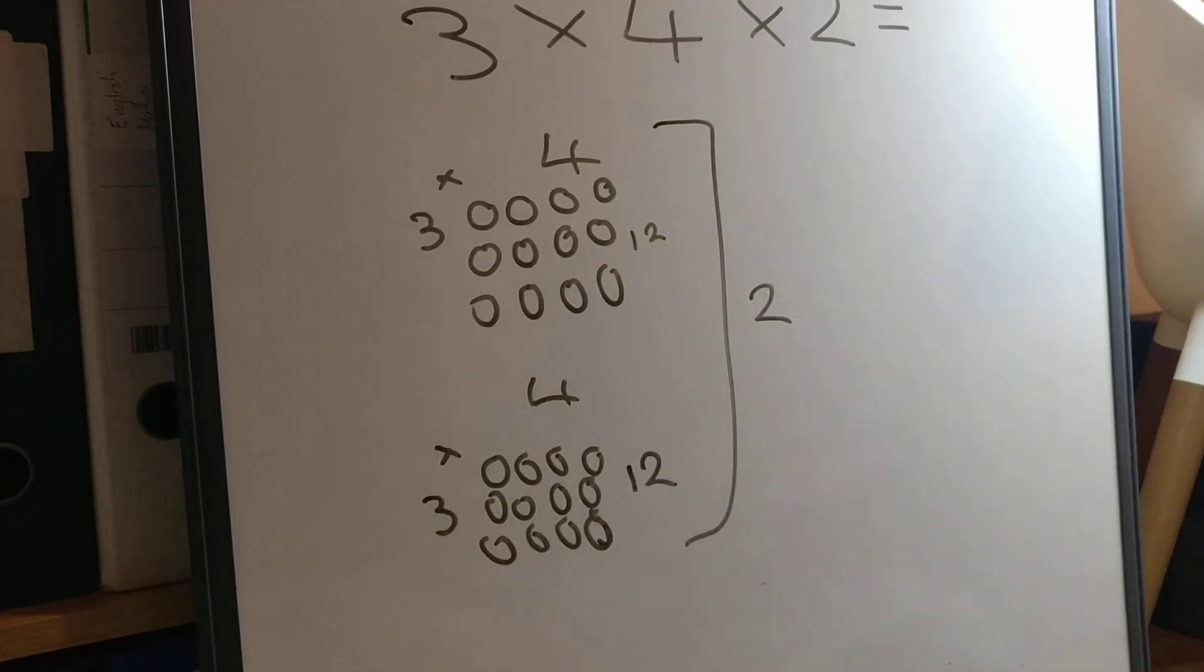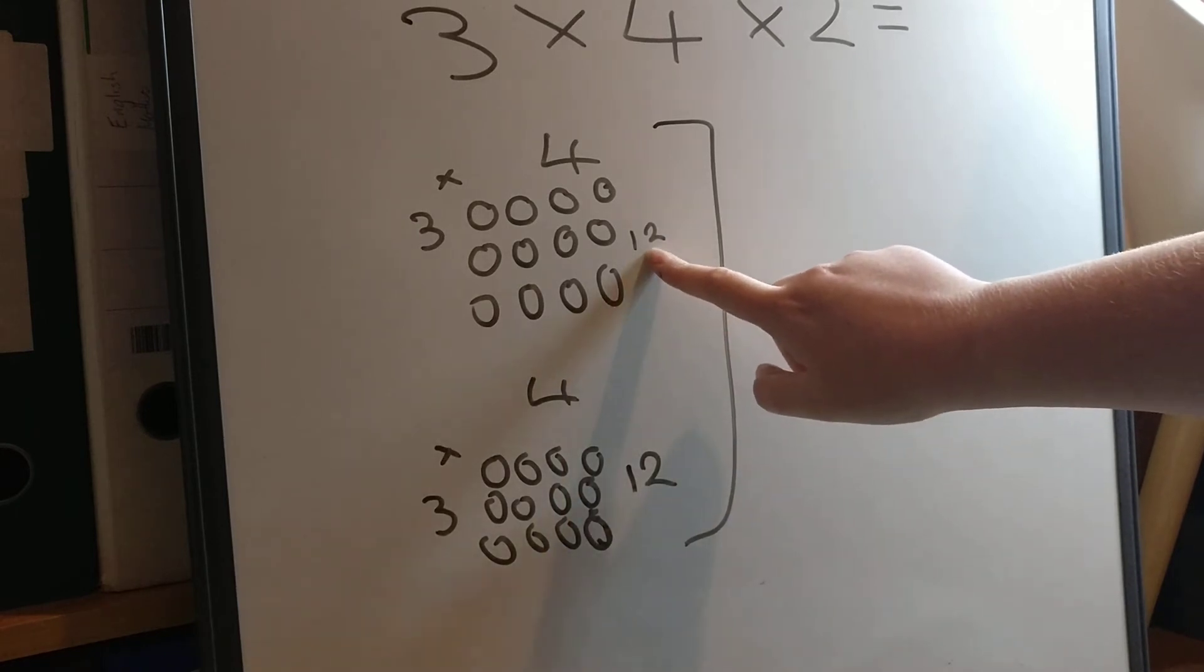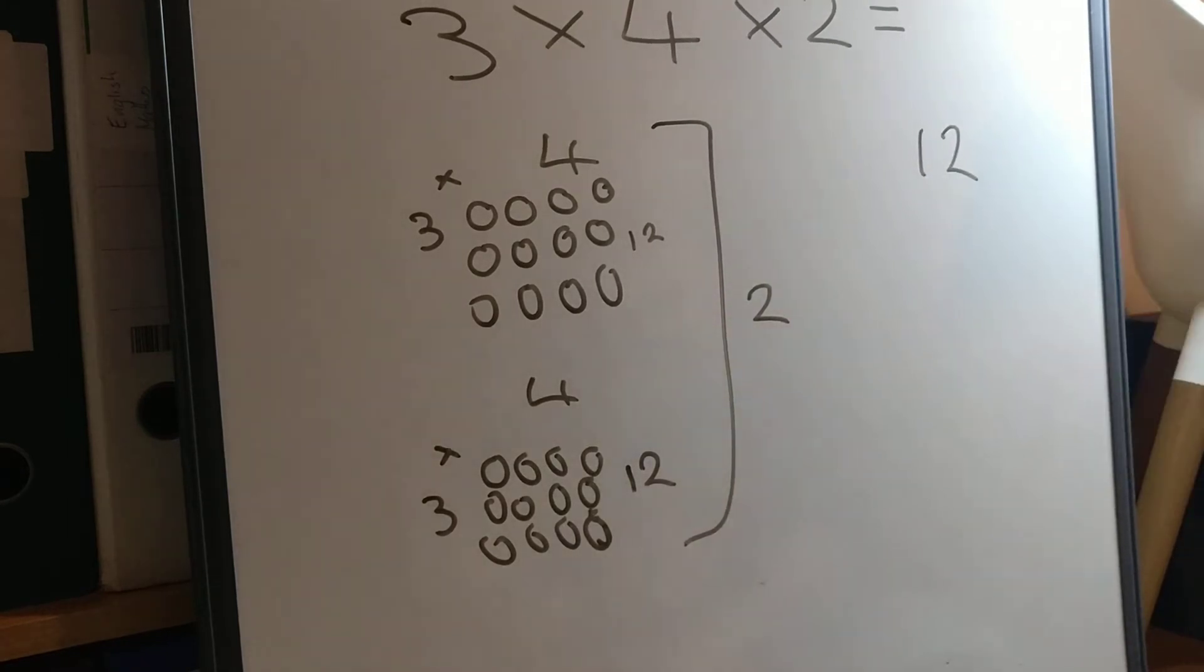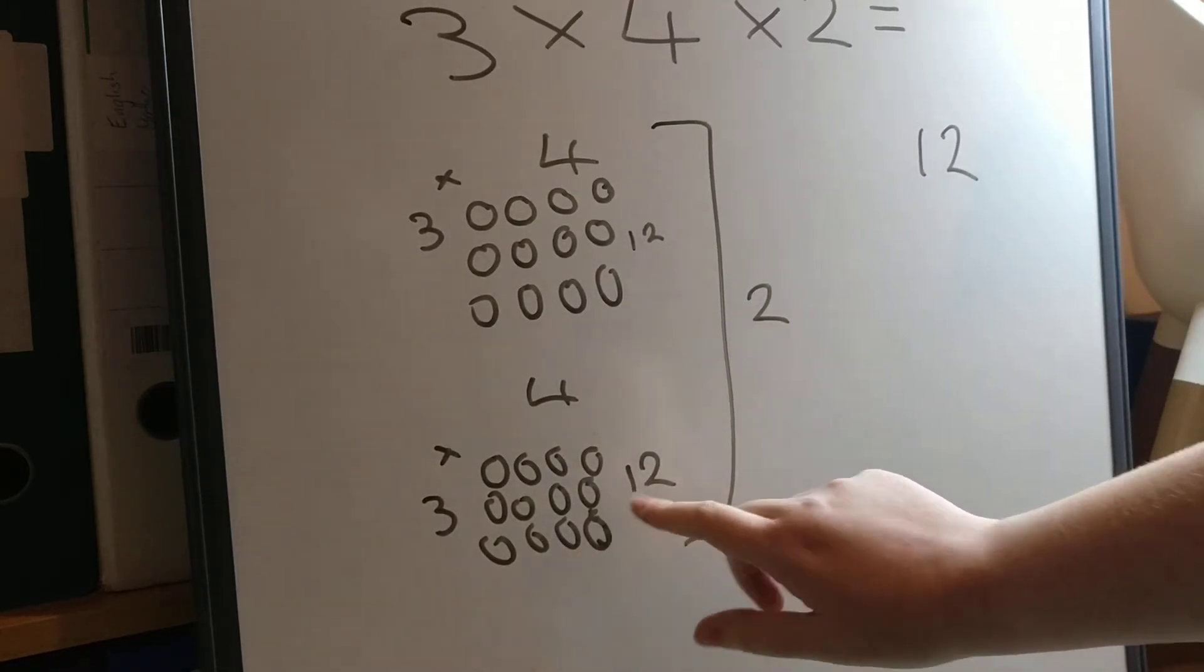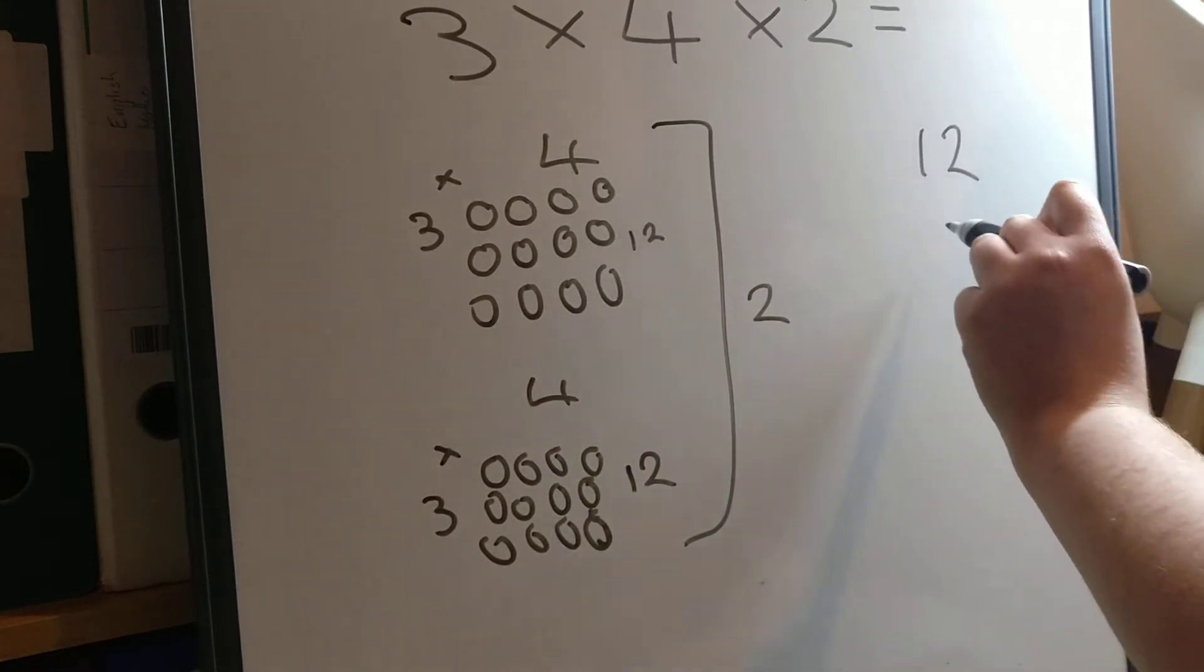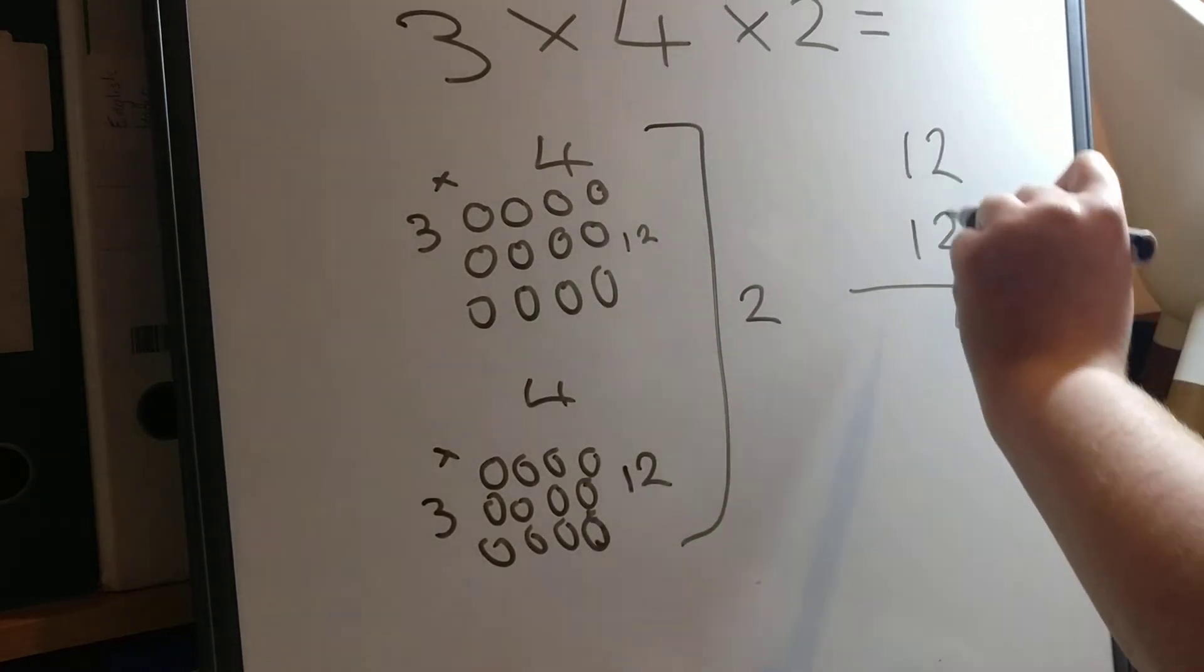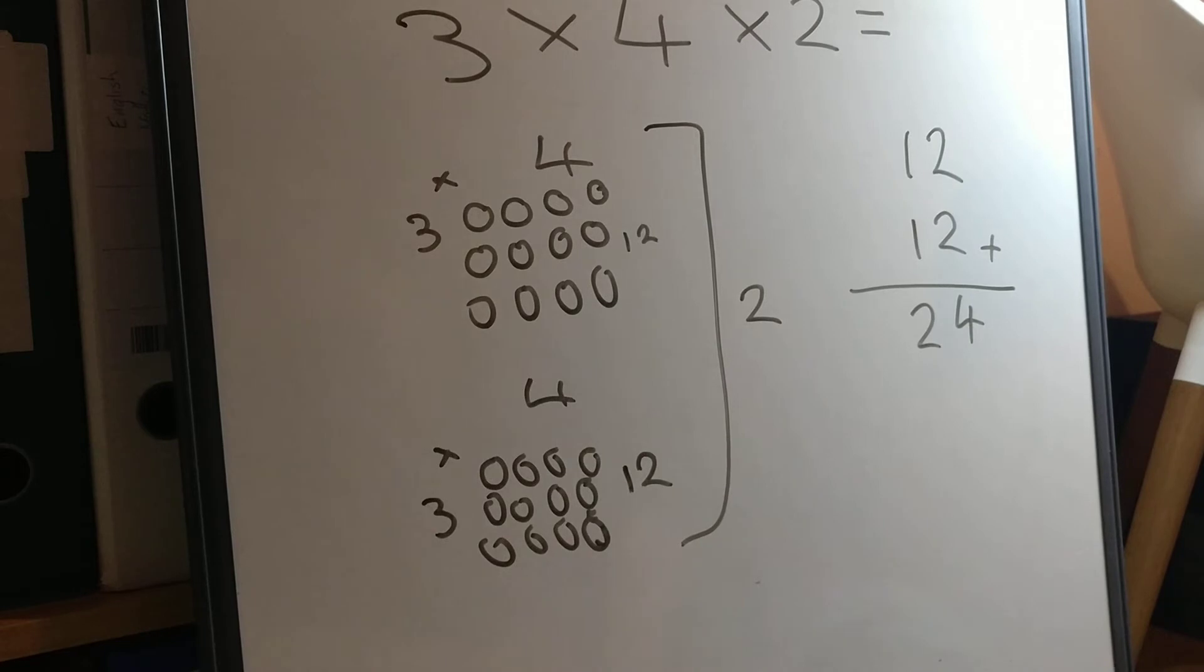So to find the answer, to find the product, we could count all of our counters together to find the total. Or we already know the total of this group, this array is 12. And the total of this array is 12 too. So we could just add those together. Two and two, four. And another one, two. So the answer, to 3 times 4 times 2, 3 multiplied by 4 multiplied by 2 is 24.